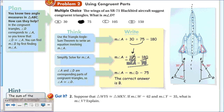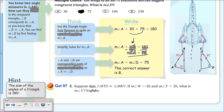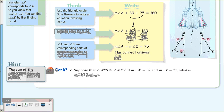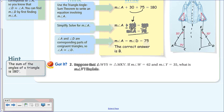Here's another 'you try.' Suppose triangle WYS is congruent to triangle MKV. If the measure of angle W is 62 and the measure of angle Y is 35, what is the measure of angle V? Pause the video and take a few moments to figure it out.